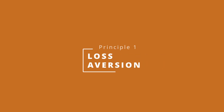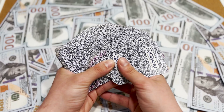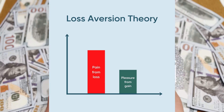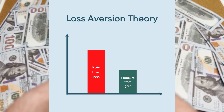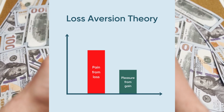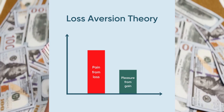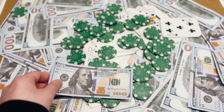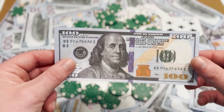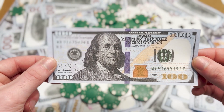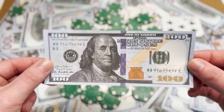So let's start with a very famous principle: loss aversion. Loss aversion is the idea that people feel the pain of losing much more than the pleasure of gaining. In fact some studies have found that the difference is about double — so if you were to lose a hundred dollars that would hurt twice as much as gaining a hundred dollars would be pleasurable.